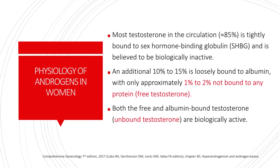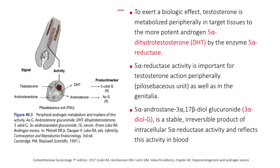Most testosterone in the circulation is tightly bound to sex hormone-binding globulin and is believed to be biologically inactive. An additional 10% to 15% is loosely bound to albumin, with only approximately 1% to 2% not bound to any protein — this is what we call free testosterone. Both the free and albumin-bound testosterone, or the unbound testosterone, are biologically active. To exert a biologic effect, testosterone is metabolized peripherally in target tissues to the more potent androgen 5-alpha-dihydrotestosterone, or DHT, by the enzyme 5-alpha-reductase. 5-alpha-reductase activity is important for testosterone action peripherally in the pilosebaceous unit as well as in the genitalia.